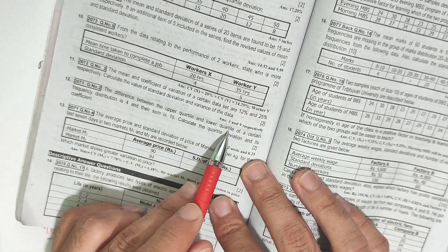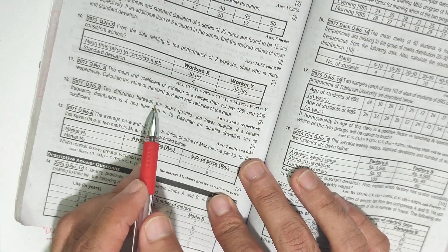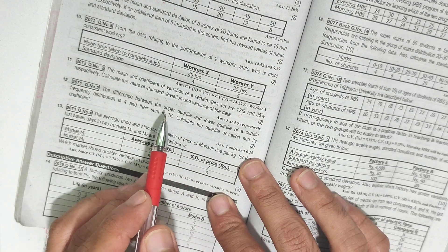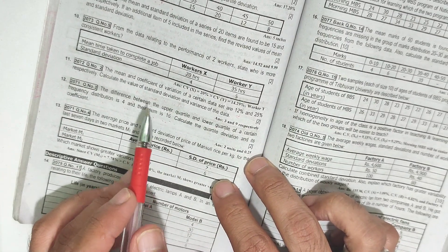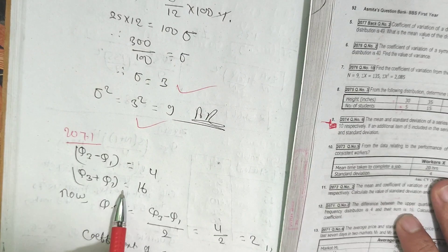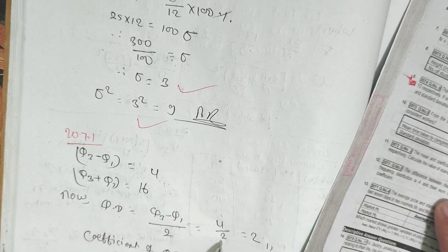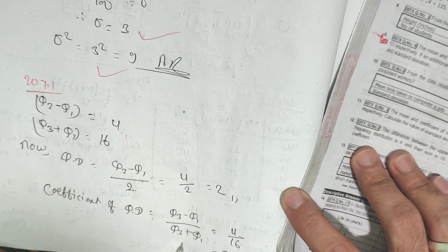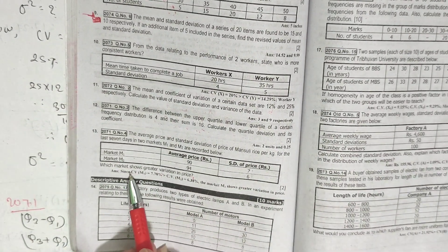The difference between the upper quartile and lower quartile of a frequency distribution is 4, and their sum is 16. Upper quartile is Q3 and lower quartile is Q1. So Q3 minus Q1 equals 4 and Q3 plus Q1 equals 16, giving a quartile coefficient of 0.25, which shows greater variation.